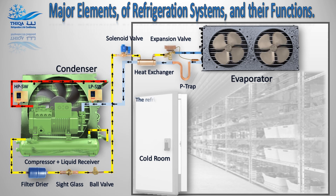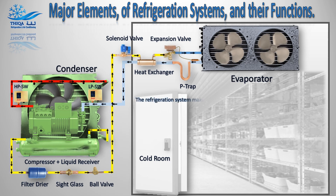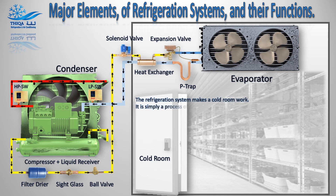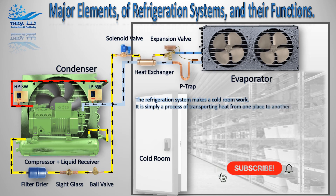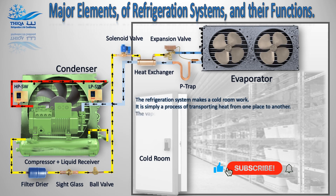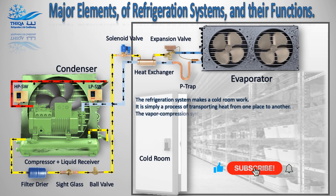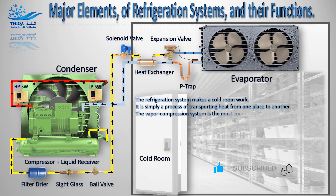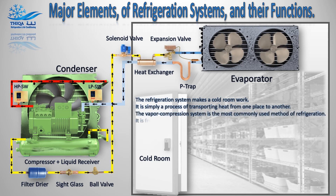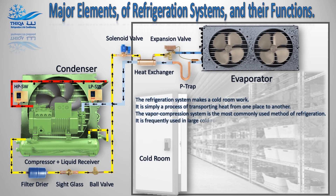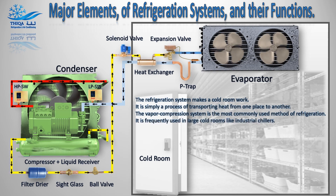The refrigeration system makes a cold room work. It is simply a process of transporting heat from one place to another. The vapor compression system is the most commonly used method of refrigeration. It is frequently used in large cold rooms like industrial chillers.